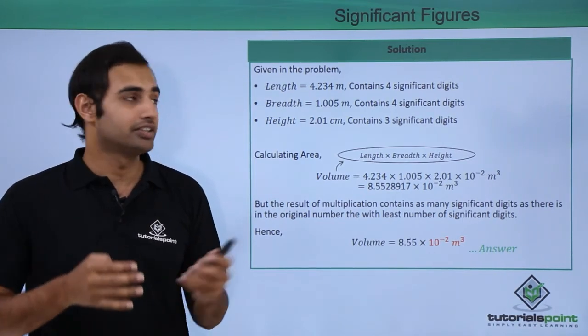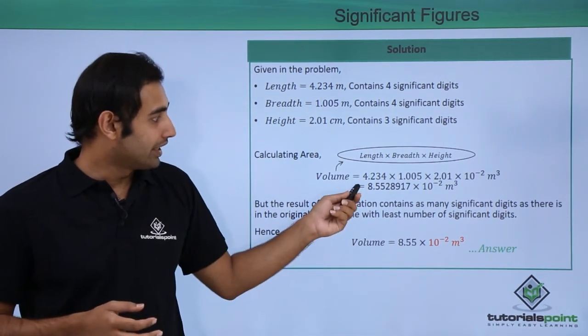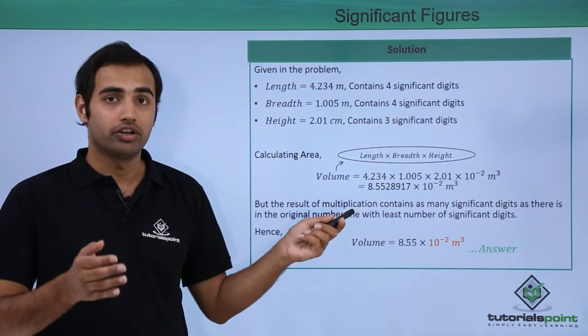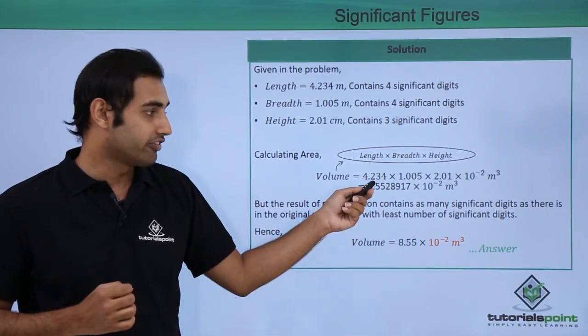So again, once again in multiplication the final result can contain only 3 significant digits because that is the least number of significant digits in the original number. So over here this entire value has to be rounded off to only 3 significant digits which is 855.